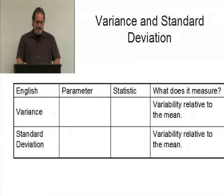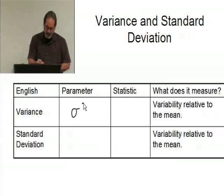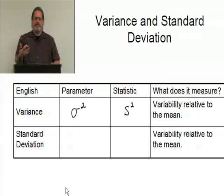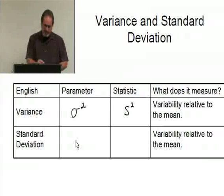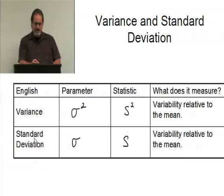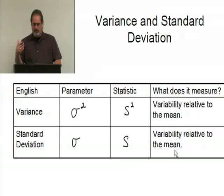Let's look at the parameters and statistics for the variance. We use the parameter sigma-squared; the statistic is s-squared. The standard deviation is the square root of the variance — so the square root of sigma-squared is sigma, and the square root of s-squared is s. The parameter for the population standard deviation is sigma and the statistic is s. Both of these measure variability relative to the mean.